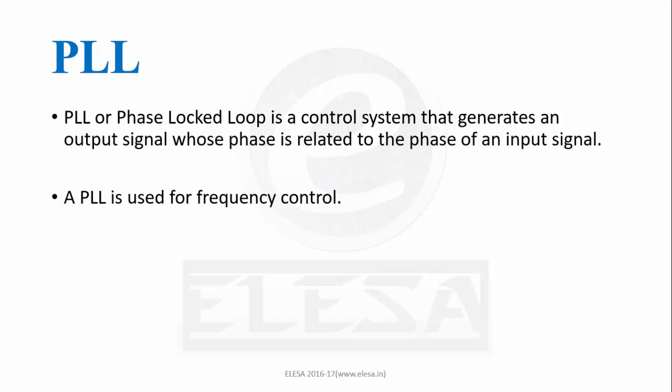The PLL works on frequencies. Two frequencies are compared and adjusted through feedback loops until the output frequency equals the input frequency. Thus, PLL works in three stages: free running, capture, and phase lock.